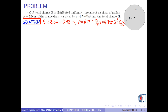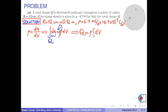The volume charge density rho is equal to dQ over dV, where dQ is the infinitesimal charge in the infinitesimal volume dV. From which we can write dQ equals rho times dV. If we take the integral of both sides, the integral of dQ is the total charge Q, and since rho is constant, it can be taken outside the integral sign. Therefore, we obtain Q equals rho times the integral of dV.